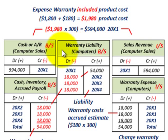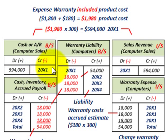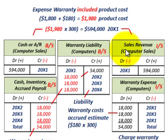At the end of 20x1 for the expense warranty approach: we debit cash or accounts receivable for $594,000 on the balance sheet, and we credit sales revenue for $594,000 on the income statement.